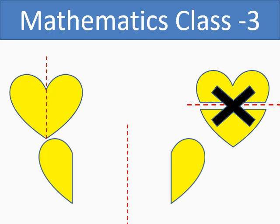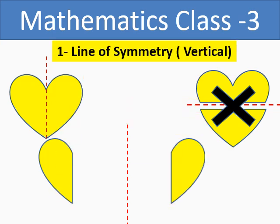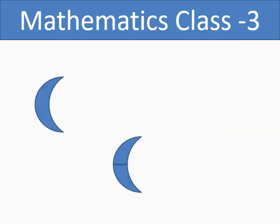So we do not have a horizontal line of symmetry. In the heart shape, we have one line of symmetry. Let us take one more example — the shape of a moon.